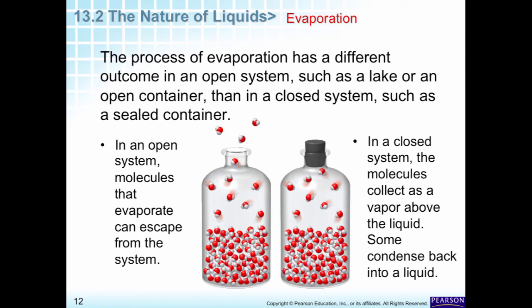In an open container, particles start coming out through evaporation and will keep going until it totally evaporates. In a closed system, you reach an equilibrium where only a set number of particles are in the gas phase and the rest remain in the liquid phase. If one particle becomes a gas, another has to go back, because there's a known ratio in a closed container. In an open container, particles go out into the world and keep evaporating — that's why we stop a bottle to keep a liquid in. If you open a bottle of perfume, after a while all the perfume is gone.